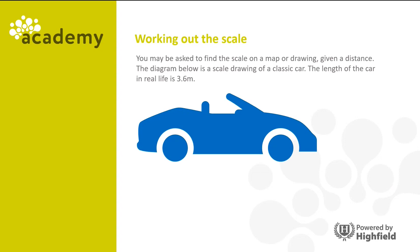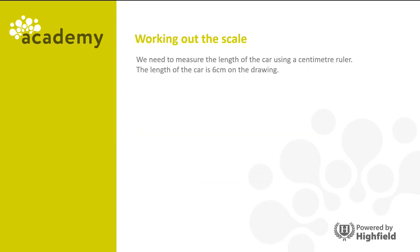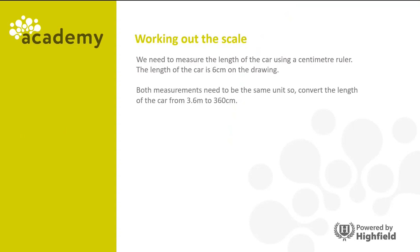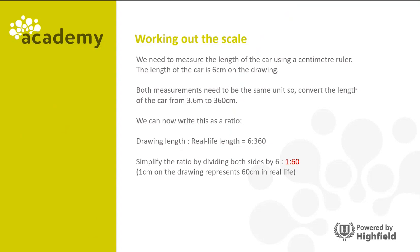Now let's look at working out scale. You may be asked to find the scale on a map or drawing given a distance. The diagram below is a scale drawing of a classic car, and the length of the car in real life is 3.6 meters. We need to calculate the scale used and give the answer as a ratio. We measure the length of the car as 6 centimeters on the drawing. Both measurements need to be the same unit, so we convert 3.6 meters to 360 centimeters. We can now write this as the ratio 6 to 360, and simplify by dividing both sides by 6, which gives 1 to 60.